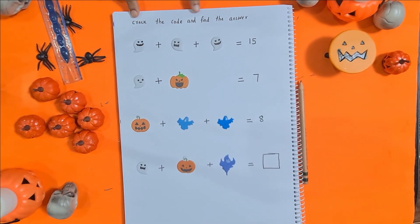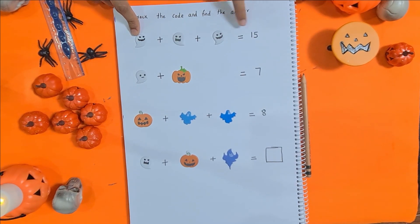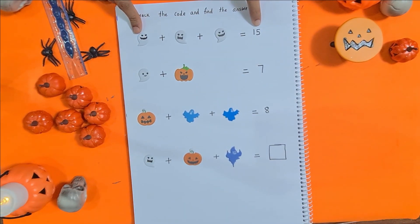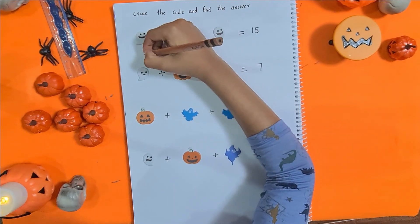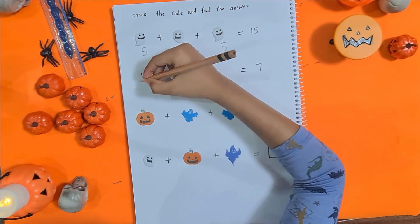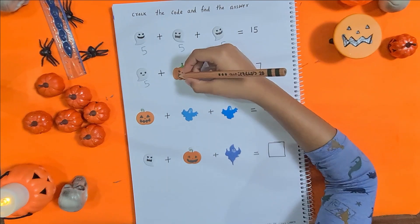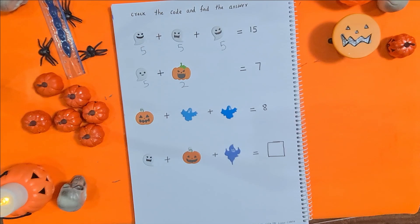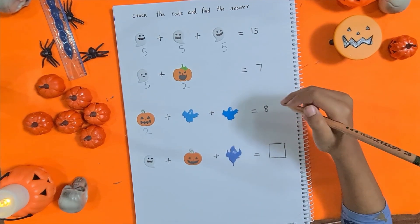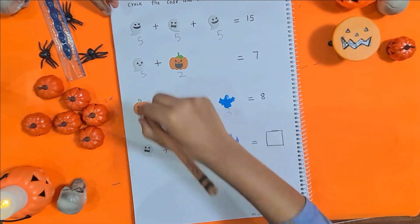The next activity is crack the code and find the answer. Here I have given the sum and he needs to give values to each ghost and find out the way to make the sum. Are you ready? Yeah. Take your pencil. The value here is fifteen, so I'm going to put one five right here. And for this, it's five because it's a ghost, and to make seven, two, yes. And now this is two because it's a jack-o'-lantern, and to make eight, this has to be three, yes. This is two, this also is three because it's a ghost, and this is five.